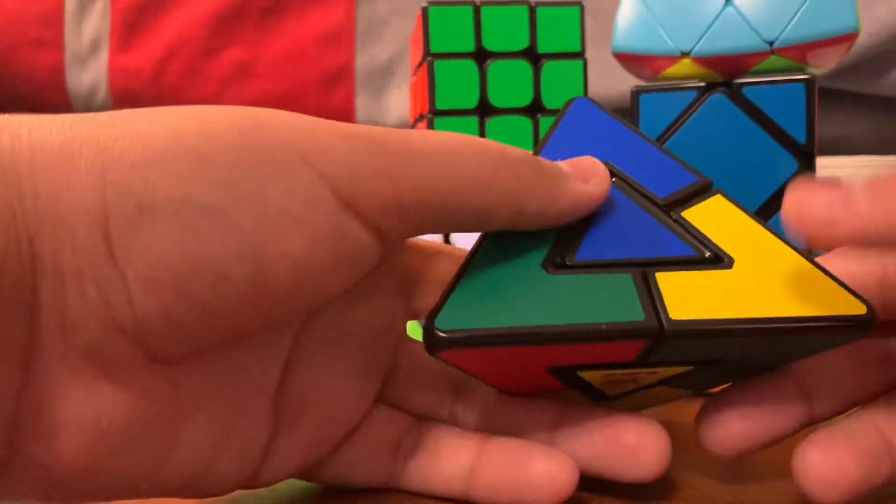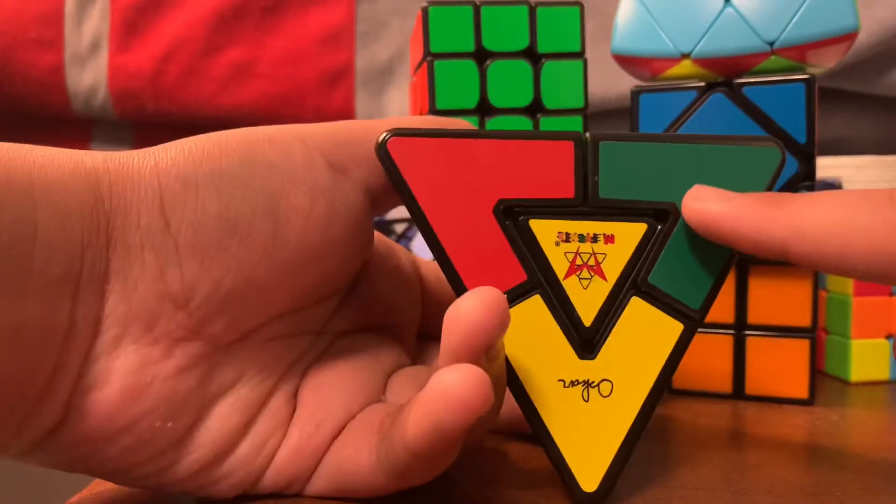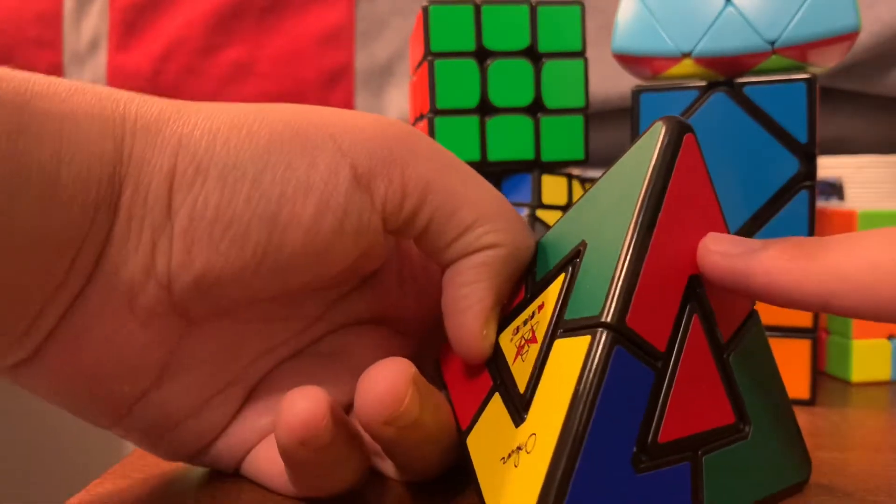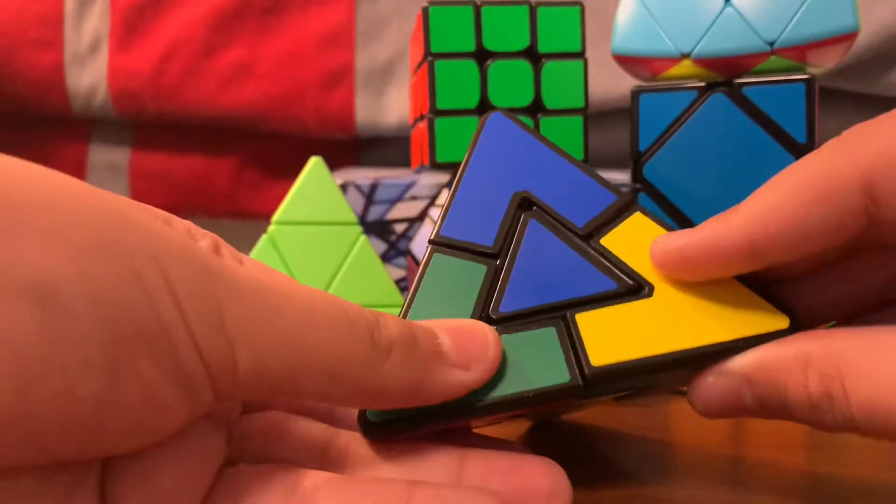So we find it - we find a green and a red right there. So we take the green piece and simply twist it over so that it matches, just like so.